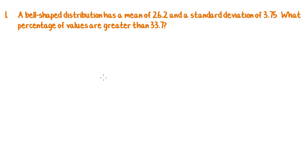Here's the first question which says, a bell-shaped distribution has a mean of 26.2 and a standard deviation of 3.75. What percentage of values are greater than 33.7?